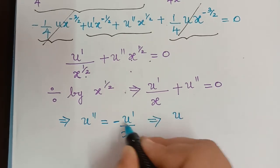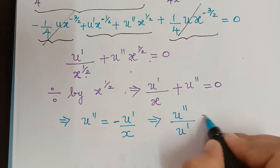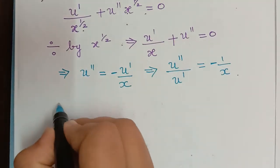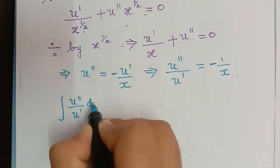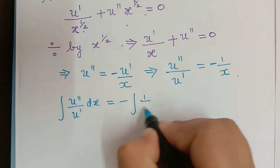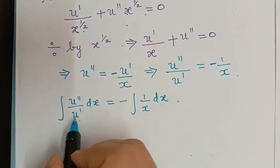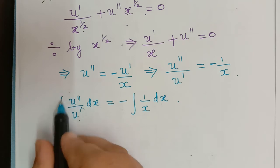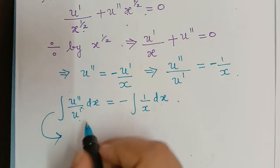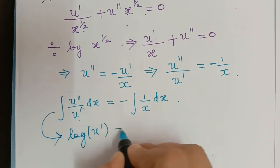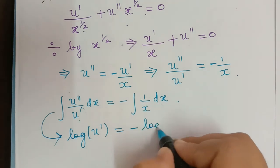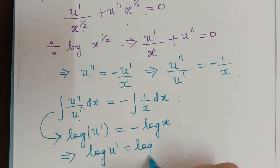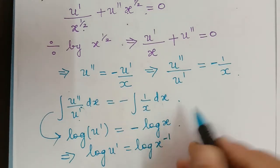Integrating both sides with respect to x: ∫(u''/u') dx = −∫(1/x) dx. Since the numerator is the derivative of the denominator, the left side integrates to log(u'). The right side gives −log(x). So log(u') = −log(x) = log(x^(−1)).